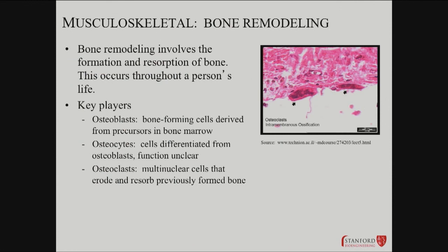Bone is living, it has cells in it, and is constantly remodeling for many reasons. People who have exerted a lot of repetitive cycles of compression on their bones will have stronger, thicker bones. Tennis players' bones in their more active arm are much thicker and stronger than those in their less active arm. This is separate from the muscle itself, but it probably relates to muscle use.